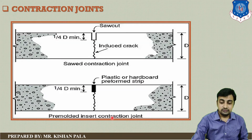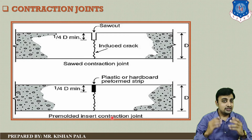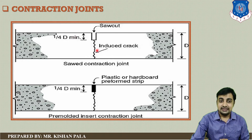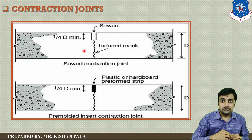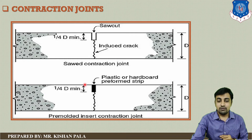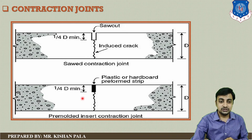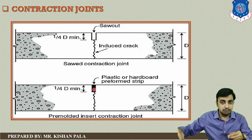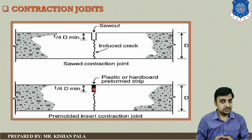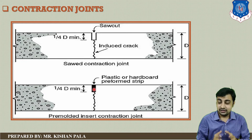The contraction joint is provided by making a cut on the upper surface of the concrete surface, creating a groove with a height of one-fourth of the slab thickness. If you want to place this type of joint, you can provide the joint either after concrete, before concrete, or during concrete work, using plastic isolation joint inserts of a particular dimension.